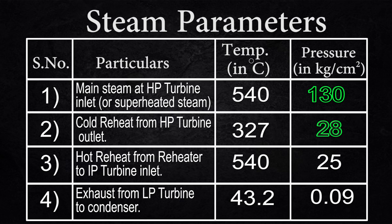We can see that the HP turbine handles 130 units of pressure and the IP turbine handles 28 units of pressure. Due to this, the HP turbine size is the smallest, as high pressure steam requires lesser volume than expanded steam. The LP turbines are the biggest in size because they have the lowest steam pressures, which require a bigger area to handle the steam flow rate.